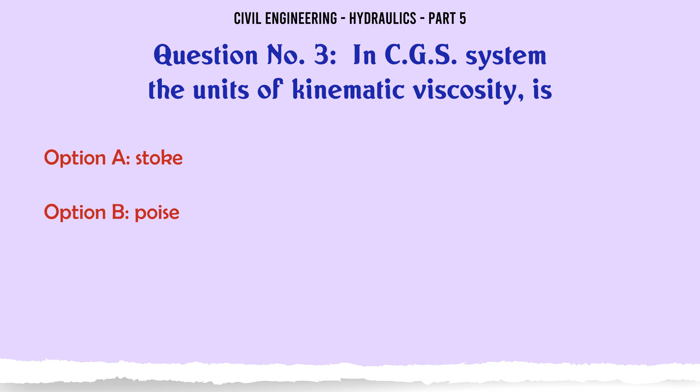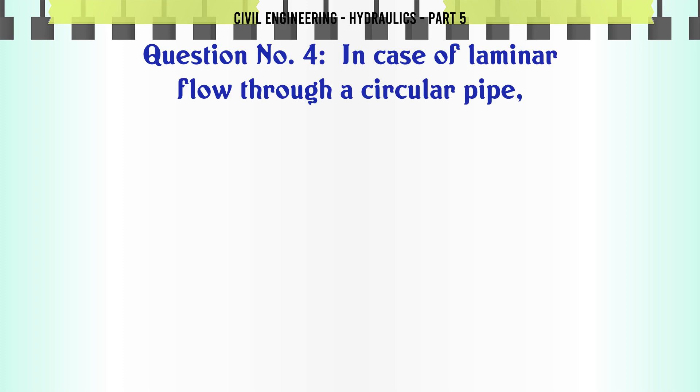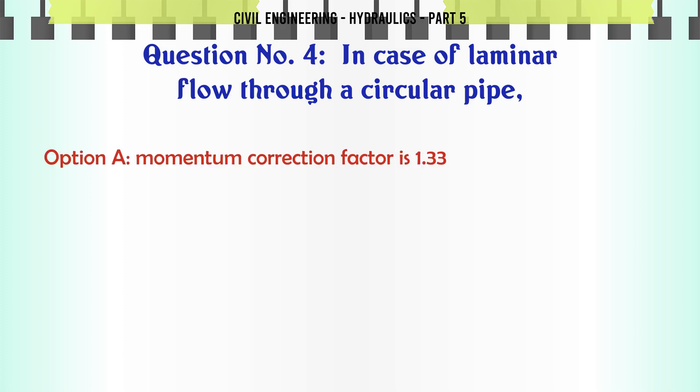In CGS system the units of kinematic viscosity is: a. stoke, b. poise, c. Newton, d. none of these. The correct answer is stoke.